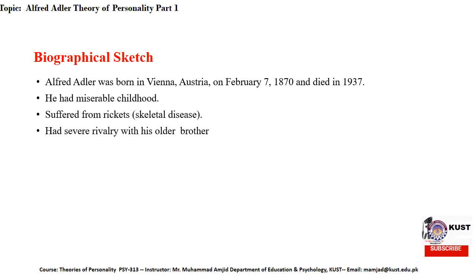Alfred Adler had severe rivalry with his older brother, who was very athletic and the model child of the family. His older brother was handsome, tall, and athletic. When Adler compared himself with his older brother, Adler thought of himself as ugly, short, and unable to take part in any type of sports. So he developed feelings of inferiority.